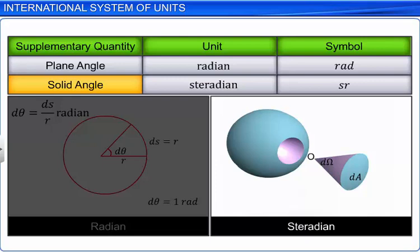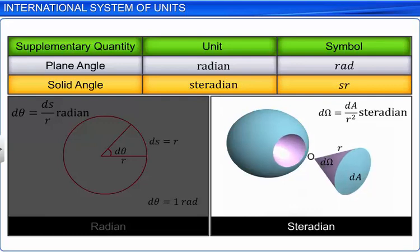With the symbol sr, if the magnitude of the intercepted area is equal to the square of the radius, then the solid angle is equal to one steradian.